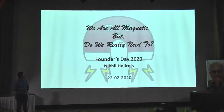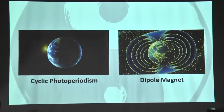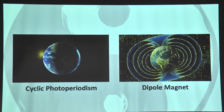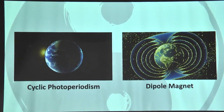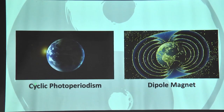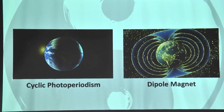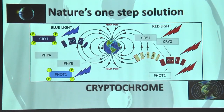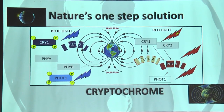We perhaps know that we are all magnetic. The story begins more than a billion years ago when two basic principles of Earth governed the way that life came to be. One was rotation that caused cyclic photoperiodism, and the other was the dipole magnet. Nature somehow came up with a brilliant solution — a one-step solution to combine both effects and create a common receptor for either process.